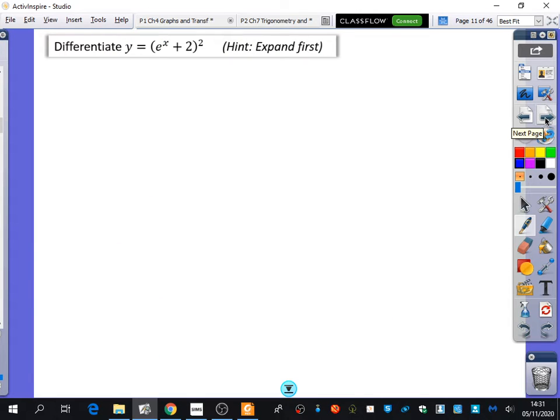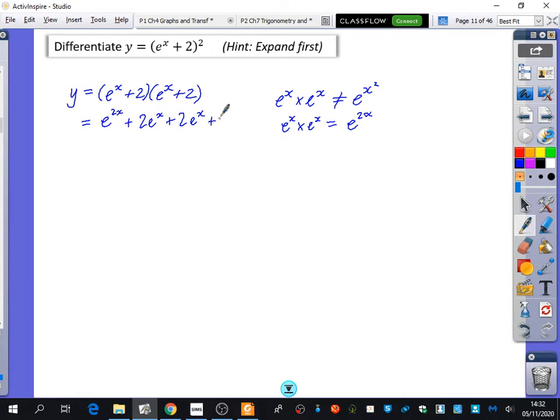So I'm just going to see how this could come up in the context of a question. This one says expand this thing that we've got first. So we're going to try and differentiate y equals e to the x plus 2 squared. For some reason, our brains find it a little bit easier to expand them when we've written them out twice. e to the power of x times e to the power of x. It's e to the power of 2x. Sometimes people wrongly say it's e to the power of x squared. But that's not what you do with powers. What do you do with the powers? You add them.